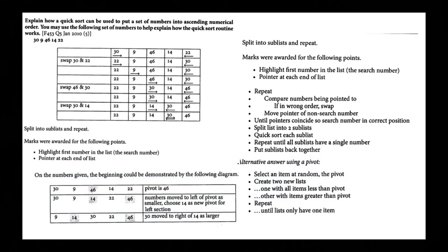So you could have done it another way which is using the pivot. So on the numbers given the beginning could be demonstrated by the following diagram. Pivot is 46. Number move to left of pivot as smaller. Choose 14 as new pivot for left section. 30 move to right of 14 as larger. So it would be select an item at random so pivot. Create two new lists. One with all items less than pivot. Other with items greater than pivot. Repeat until lists only have one item. So that's a more kind of simpler way to do. But I prefer just to go the first way.